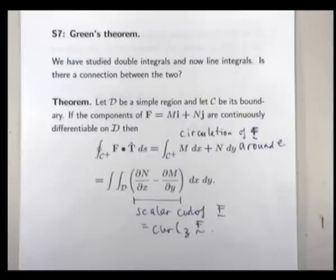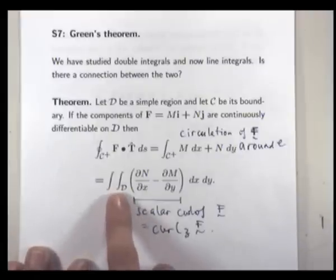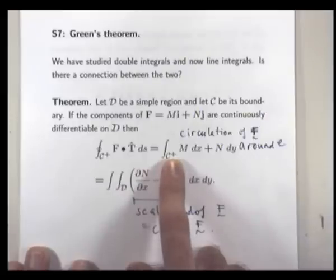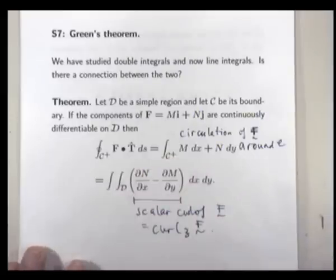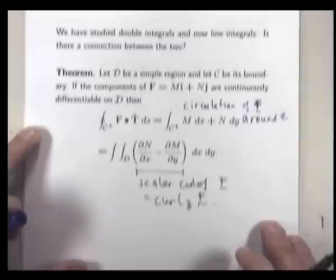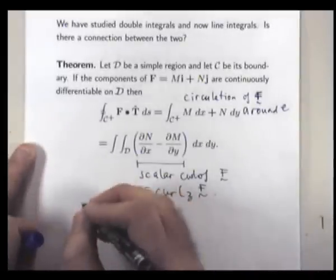Now, why is this known as one of the fundamental theorems of vector calculus? Well, that's a good question. See here, we have two integral signs, and we're integrating over some two-dimensional region. Here we only have one integral sign, and we're integrating over the boundary.